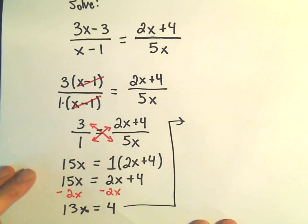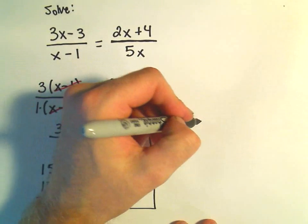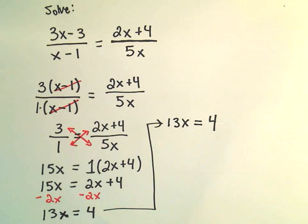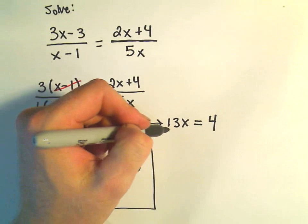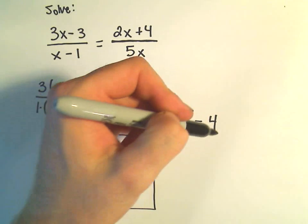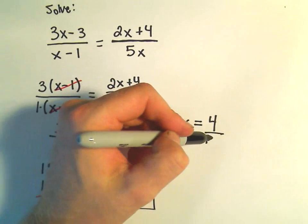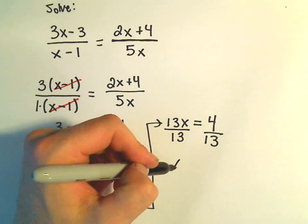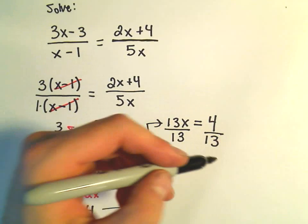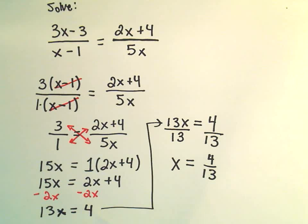We've got positive 4 left over on the right side, so we basically just have one little step left. 13x equals 4. Since we're multiplying by 13, I just want to get positive 1x all by itself, so we'll divide by 13. On the left side, 13 over 13 is just 1x. On the right side, we get 4 over 13, and that'll be our solution.